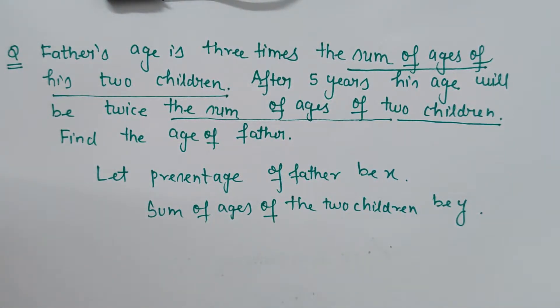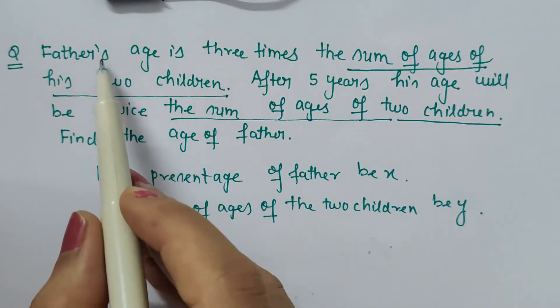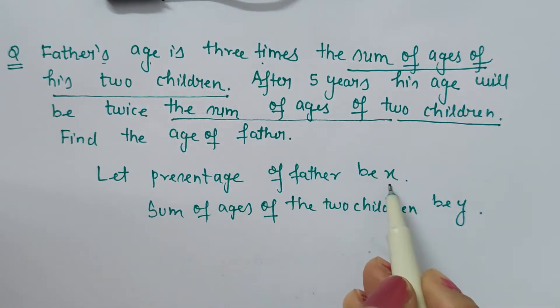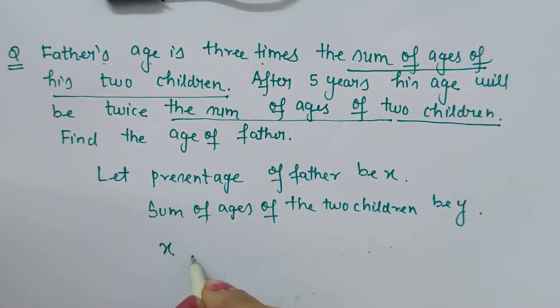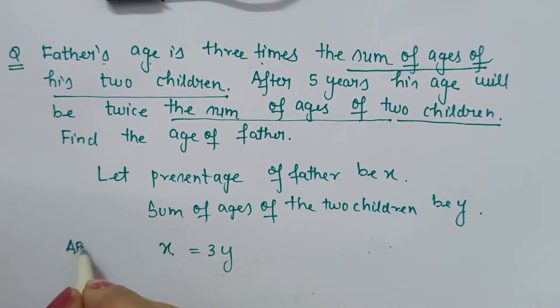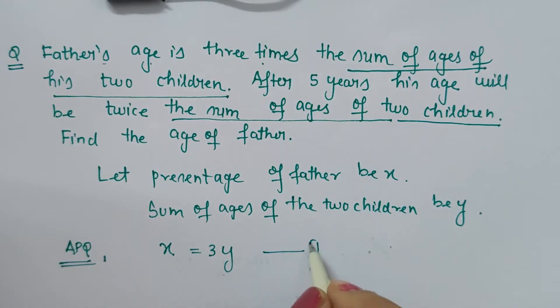Now we can easily relate in mathematical form. Father's age is three times the sum of ages of his children, so father's age is x. Father's age is three times the sum of ages of the two children, which is y. So x = 3y. This is equation one.